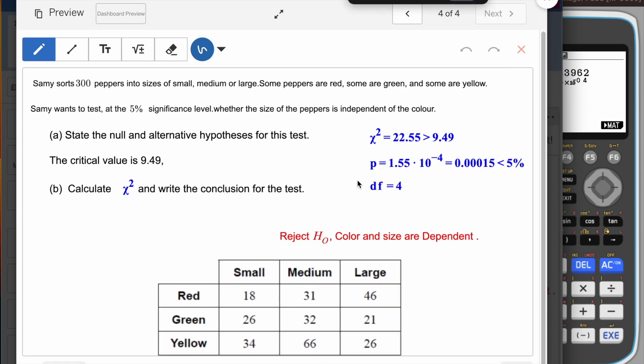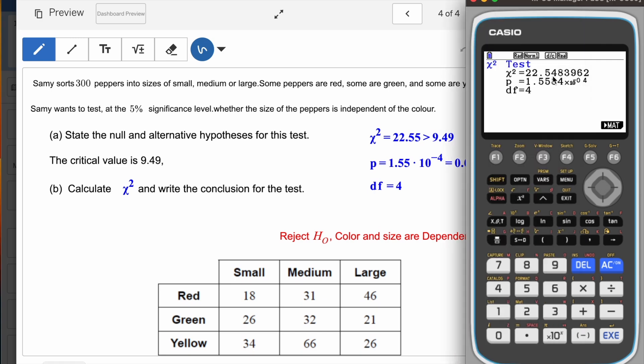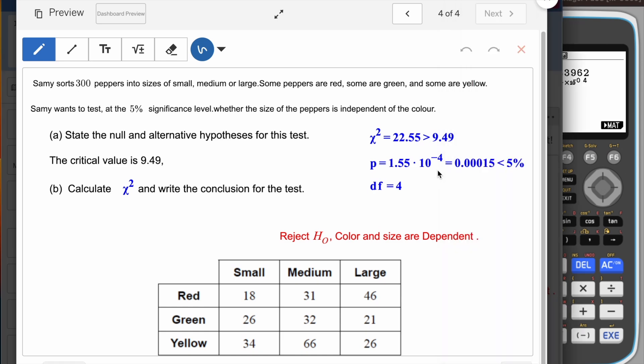We can compare these values. Chi-square was 22.5455 and p-value is 1.5584 times 10 to the power negative 4, which equals 0.00015. If you compare the p-value with significance level given in the question, it is less than that.